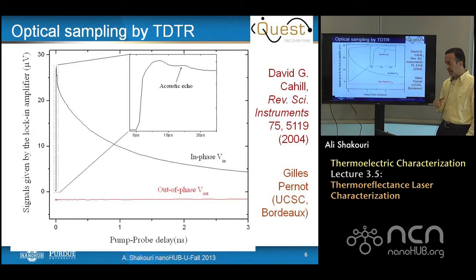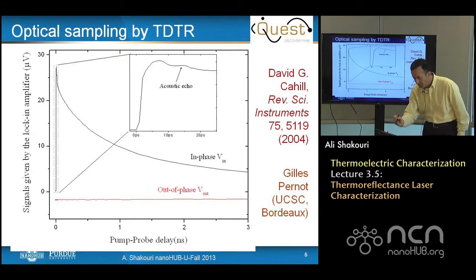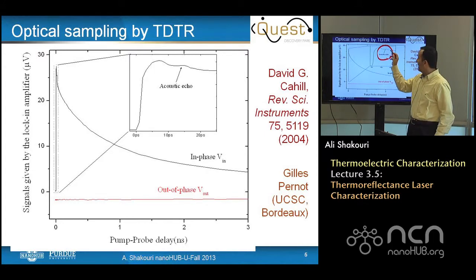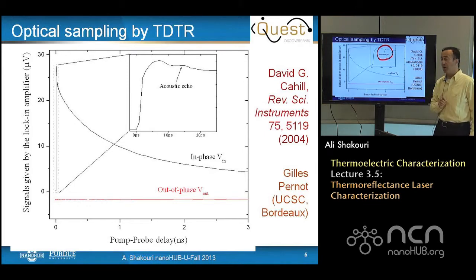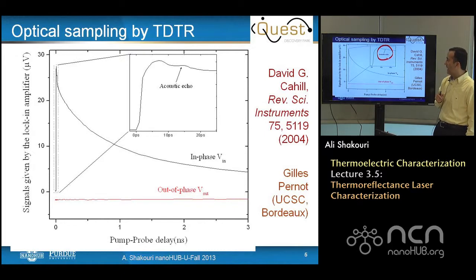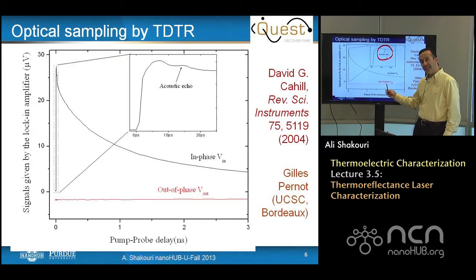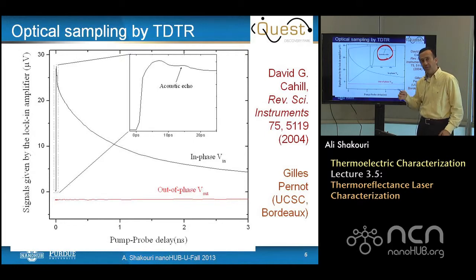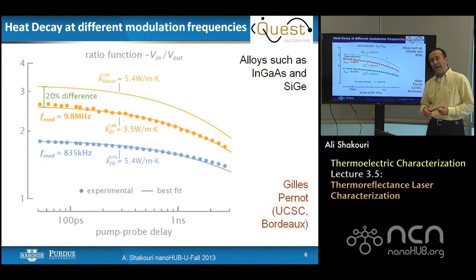There is an overall modulation coming because of the short repetition rate. What David Cahill suggested in his 2004 paper is that we need to look at both the real part, or the in-phase signal in the lock-in amplifier, as well as the out-of-phase — something that was previously neglected. In the in-phase at short times, in the first 10-20 picoseconds, we see a tiny peak from the aluminum film expanding when heated, and from this we can get the thickness of the aluminum film quite precisely to within a couple of nanometers. The out-of-phase signal relates to the cumulative effect — that pulses add up to each other — and by taking the ratio, the analysis becomes much more sensitive to the thermoconductivity of the film.